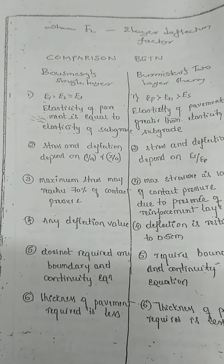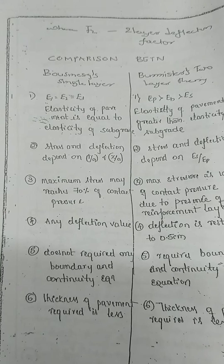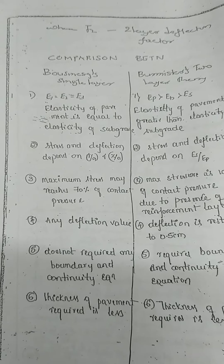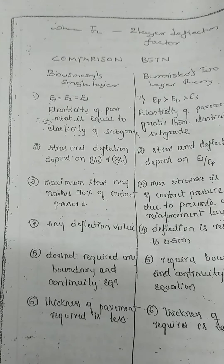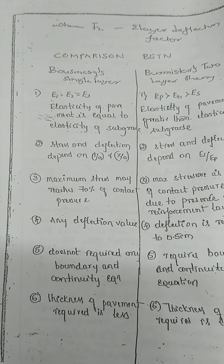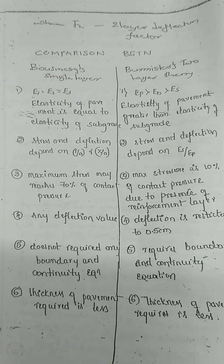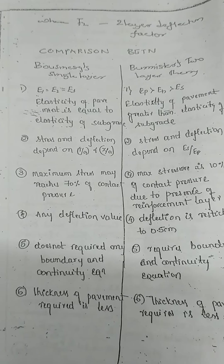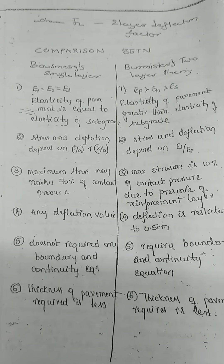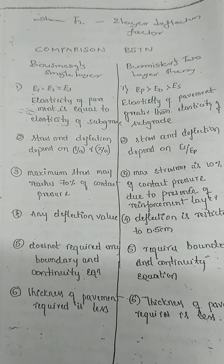First difference: In Bosnick's single-layer theory, e1 is equal to e2 and e3 — meaning the elasticity of the pavement equals the elasticity of the subgrade. In Burmester's two-layer theory, ep is greater than eb, which is greater than es — the elasticity of the pavement is greater than the elasticity of the subgrade.